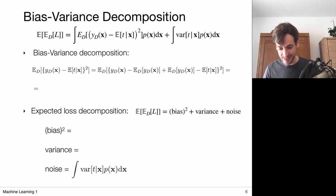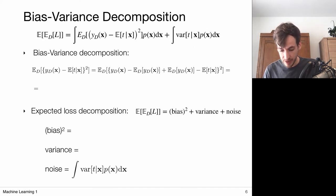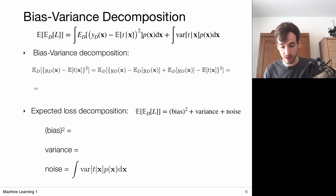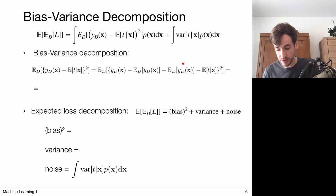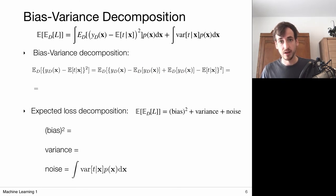We estimate the performance of the learning algorithm by averaging the expected loss over all learned models for different datasets D. This expected loss consists of the noise term — independent of the model, always there — plus a component we focus on: the expected loss over all datasets of the model error with respect to the ground truth. We decompose this error into bias and variance by adding zero — minus the expectation over models plus the expectation over models.